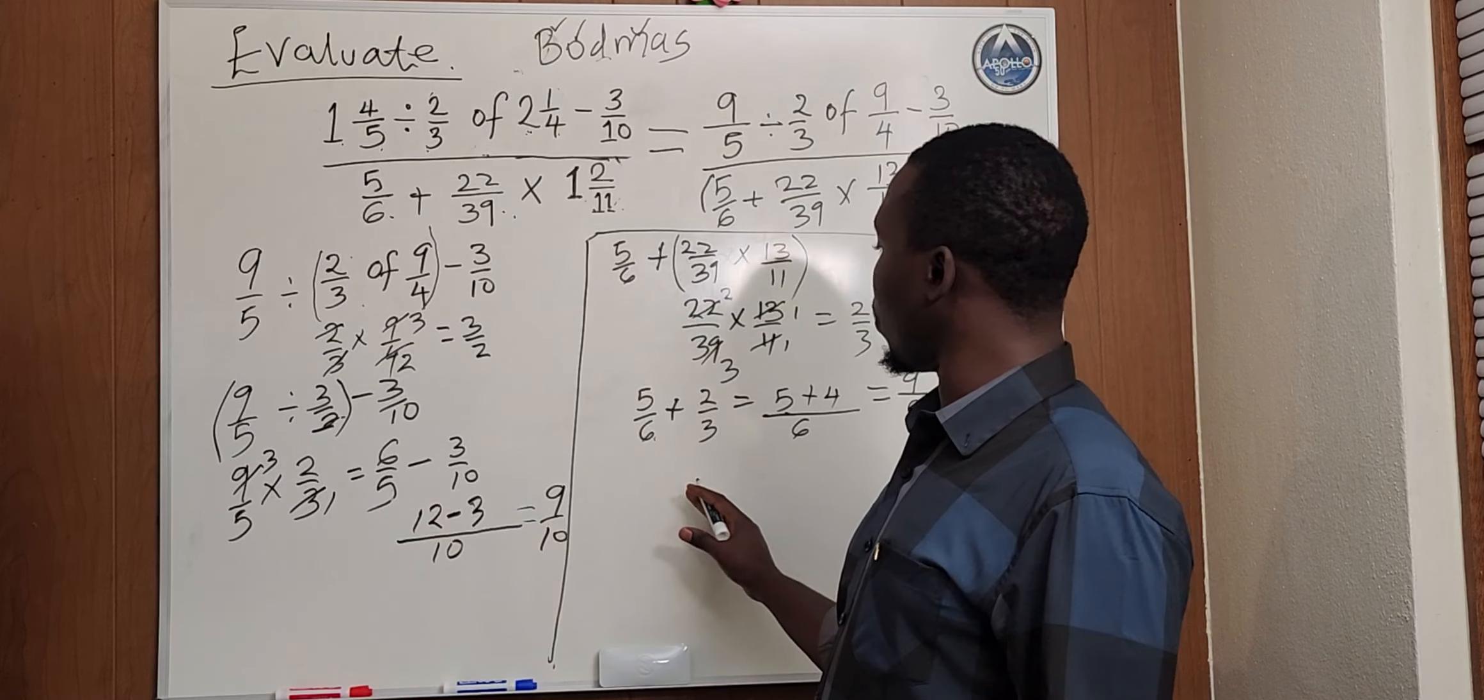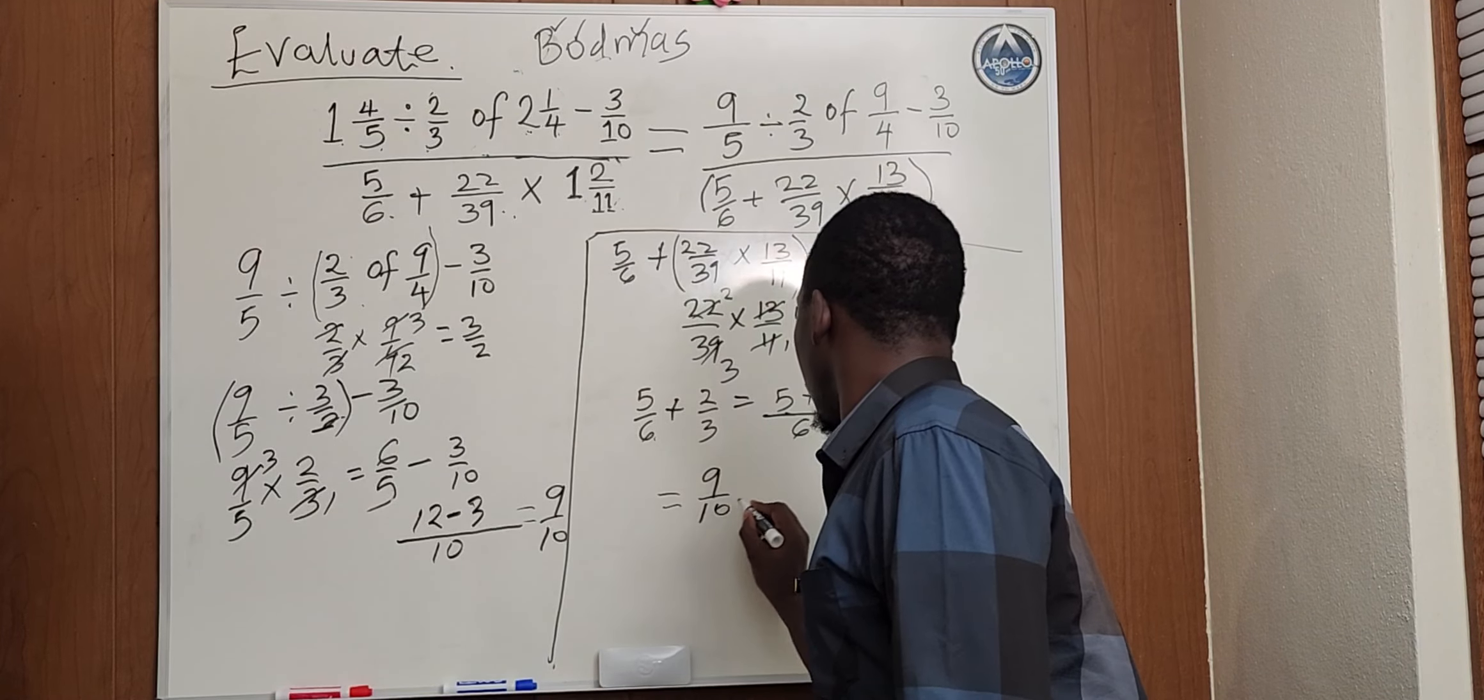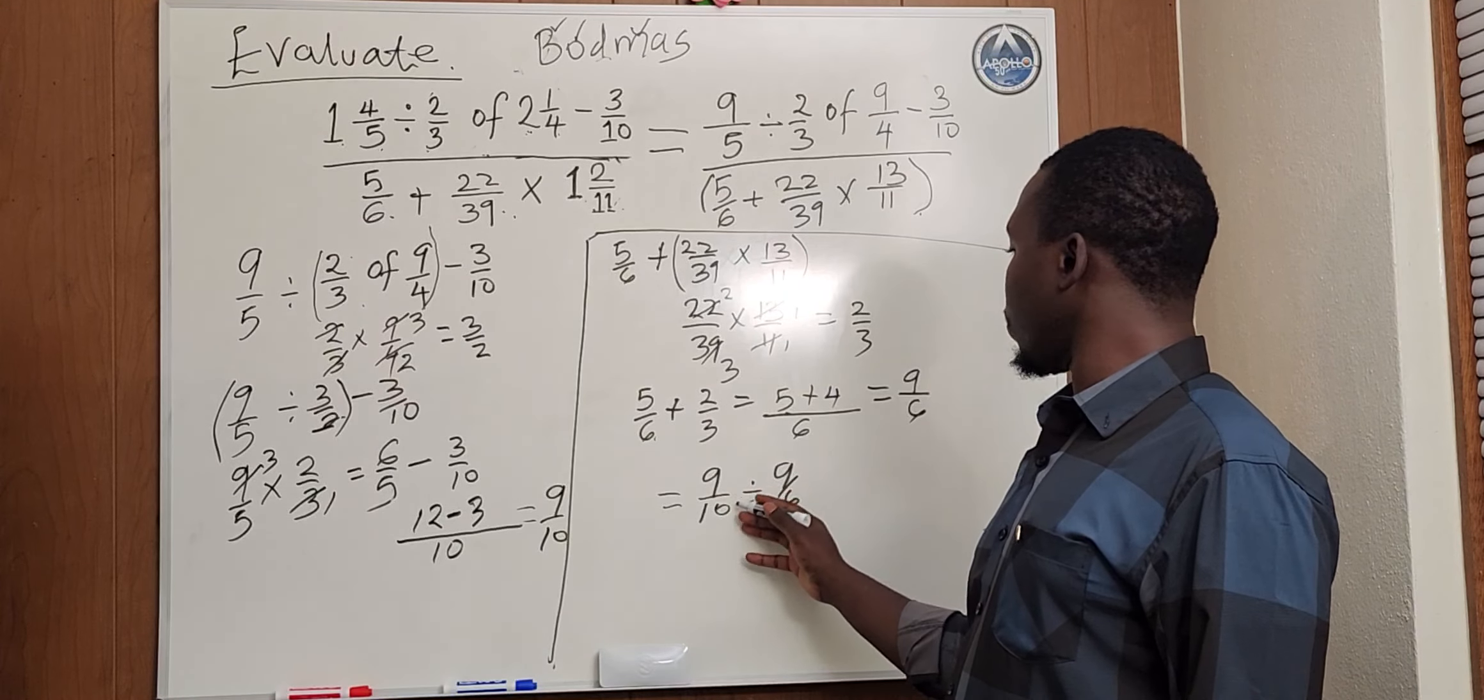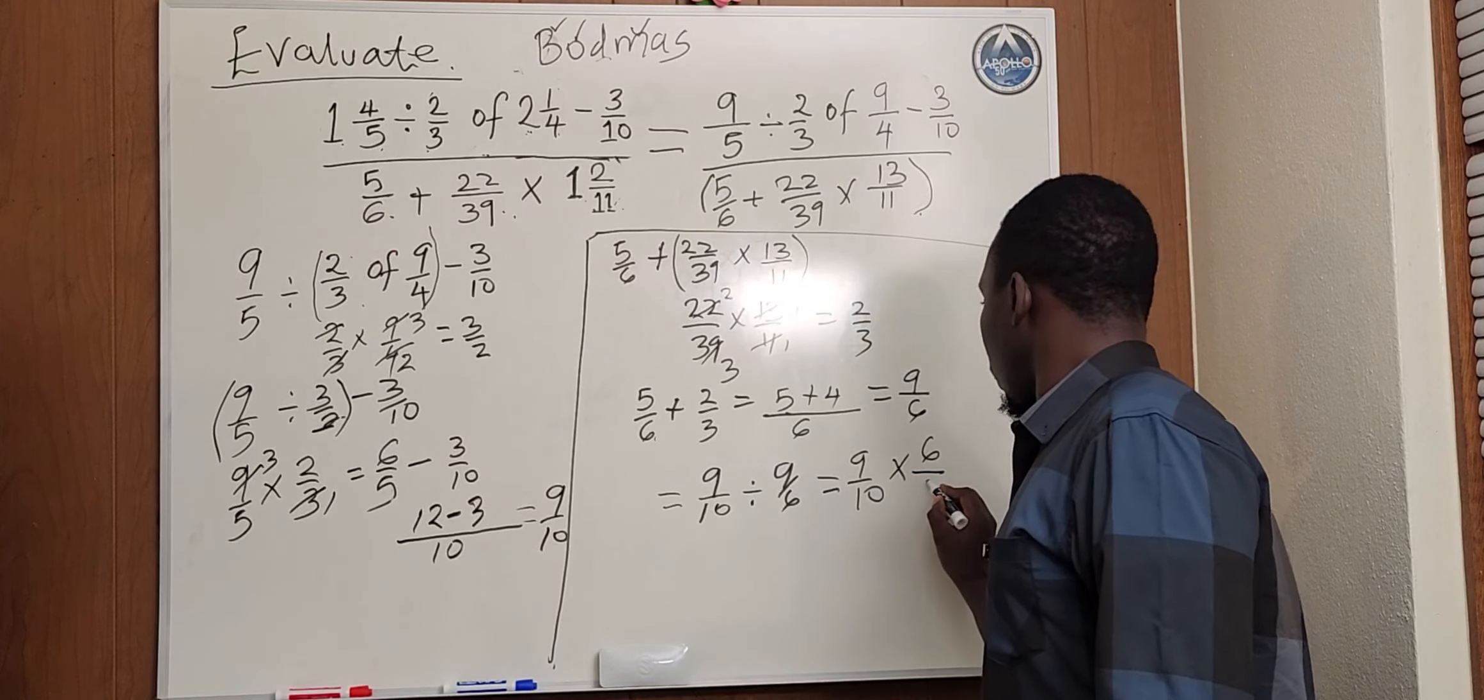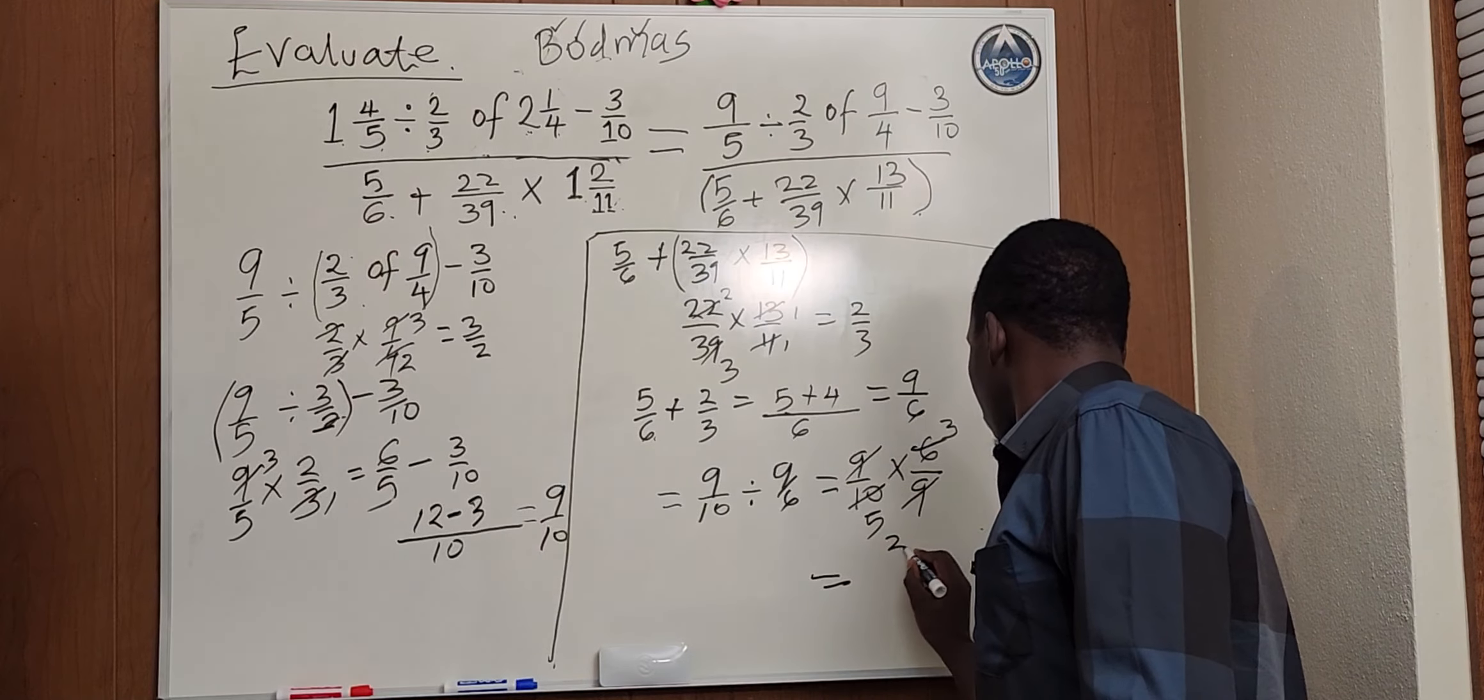Now the final answer will be the answer we got for the numerator divided by the answer of the denominator here, which will give us 9 over 10 divided by 9 over 6. As I said earlier, when you divide two numbers here, it's the same as multiplying by the reciprocal, which will give us 9 over 10 times 6 over 9. 9 will cancel out as shown. Then 2 goes here 3, 2 goes here 5. Then our final answer will be 3 over 5.